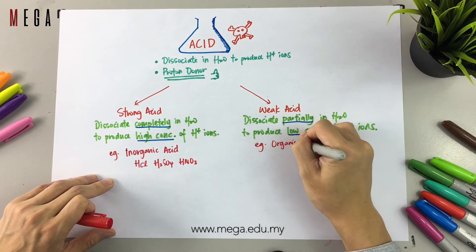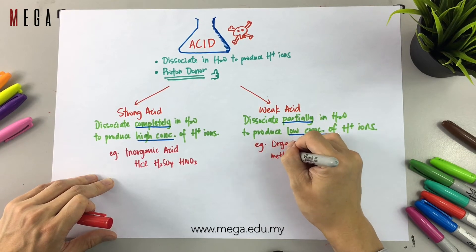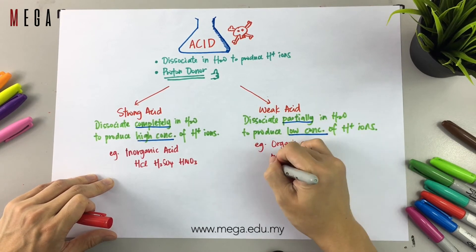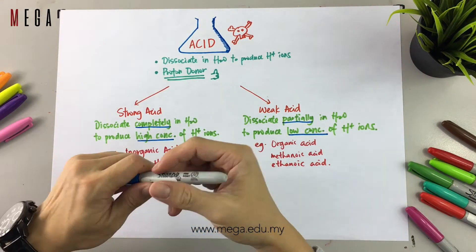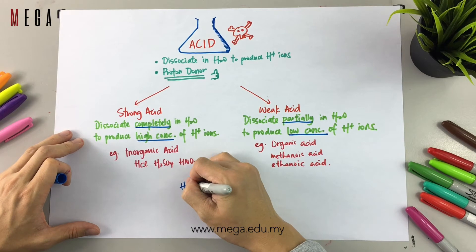Whereas for weak acid, they are all organic acids such as methanoic acid and ethanoic acid. Just remember, all inorganic acids are strong acids. All organic acids are weak acids.